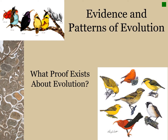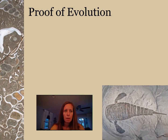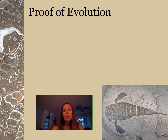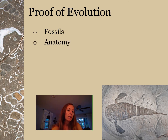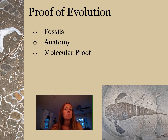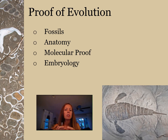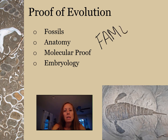Welcome to this week's lecture on evidence and patterns of evolution. We're going to prove that evolution actually occurred. There are four main things we'll look at: fossils, anatomy of organisms, molecular proof — like DNA, RNA, and proteins — and embryology. The first letter of each spells out FAME, a good acronym to remember the ways we prove evolution occurs.